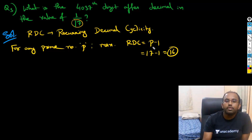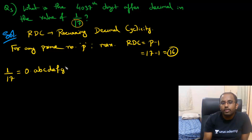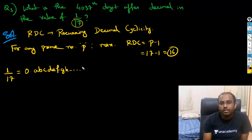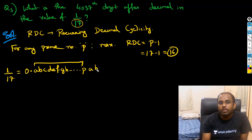So if I write the value of 1 by 17, let's say 0.A, B, C, D, E, F, G, H — it will go up to 16 digits, and after that it starts repeating again: A, B, C, D, E, F... until P. This is the fundamental concept of RDC.